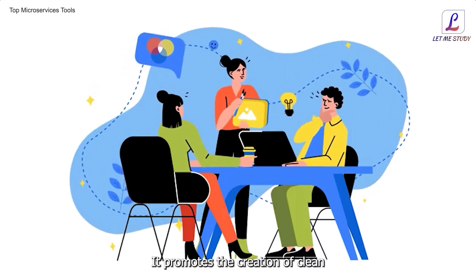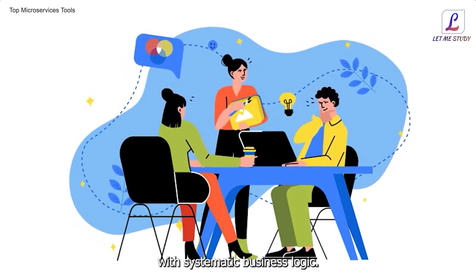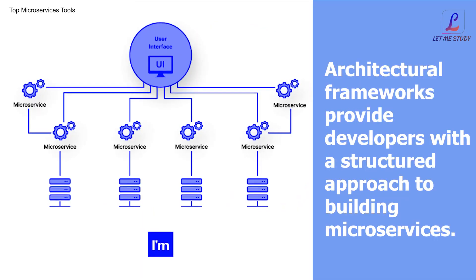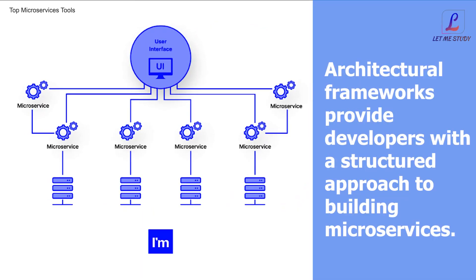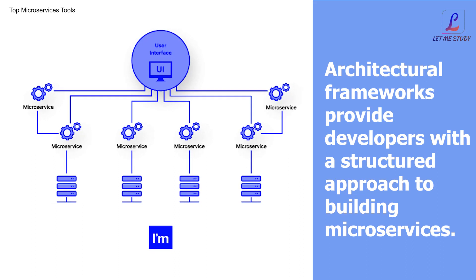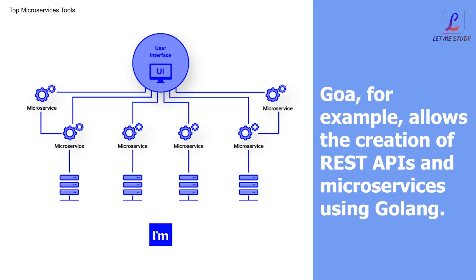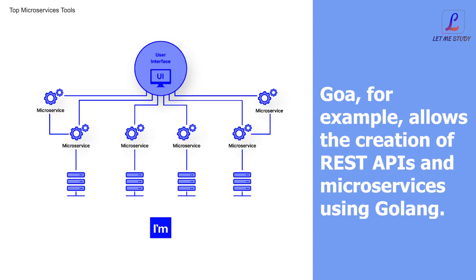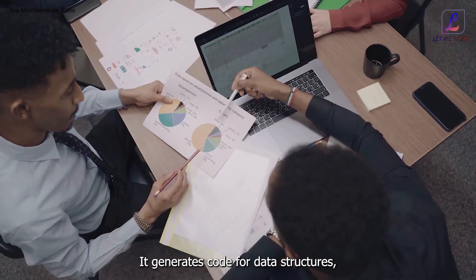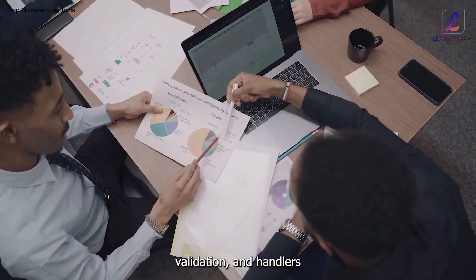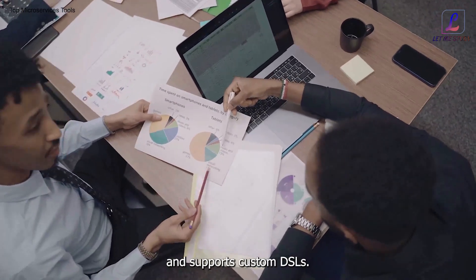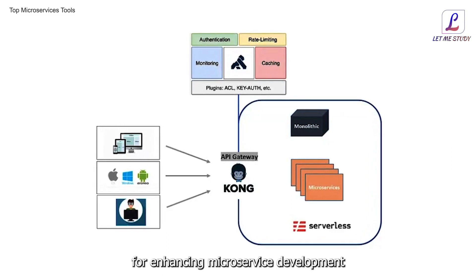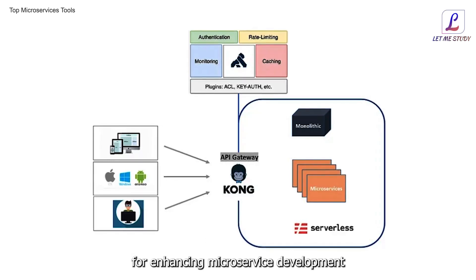Architectural frameworks for microservices provide developers with a structured approach to building microservices. Goa, for example, allows the creation of REST APIs and microservices using Go. It generates code for data structures, validation, and handlers, and supports custom DSLs. Kong, another prominent framework, provides ready-to-deploy plugins for enhancing microservice development and deployment. It leverages container and microservices design patterns to quickly build API-centric applications.